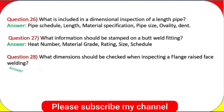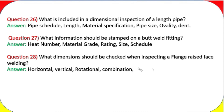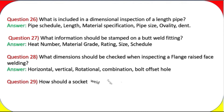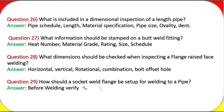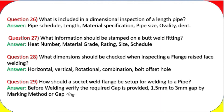Question 28: What dimensions should be checked when inspecting a flange raised face welding? Answer: Horizontal, vertical, rotational combination, bolt offset, and vent hole. Question 29: How should a socket weld flange be set up for welding to a pipe? Answer: Before welding, verify the required gap of 1.5 mm to 3 mm is provided, by marking method or gap ring.